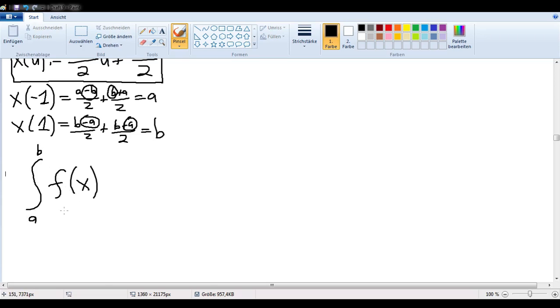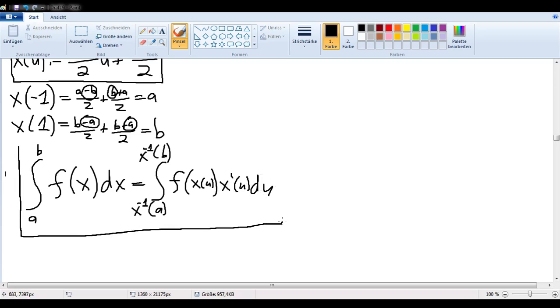We have the integral of f of x from a to b, and we can rewrite that as x to the negative 1 of a and x to the negative 1 of b. Our integrand is now f of x of u times x prime of u. That is just the rule for integration by substitution.